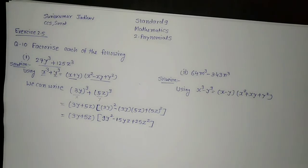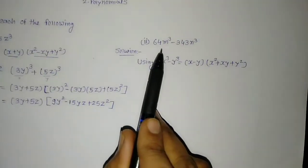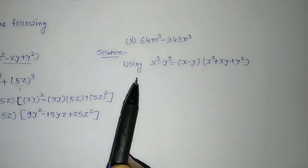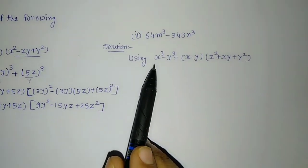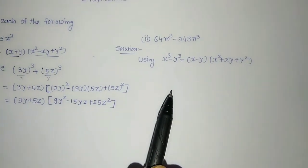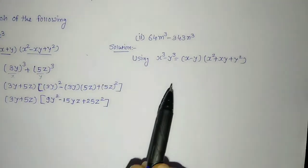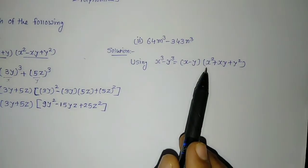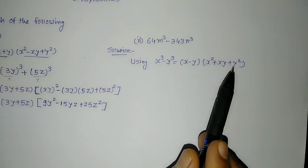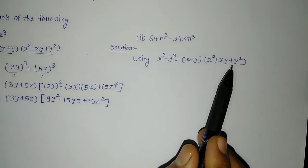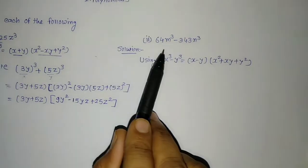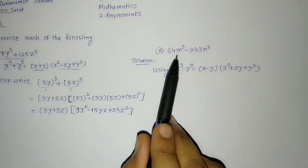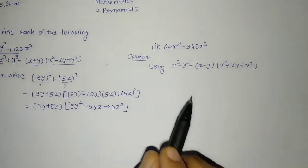Let us see the second one, that is 64m cube minus 343n cube. Here we are going to use the identity verified in question number 9: x cube minus y cube is equal to x minus y into another bracket x square plus xy plus y square. This is what we want to use. First of all, we will try to write this in the format of x cube minus y cube.